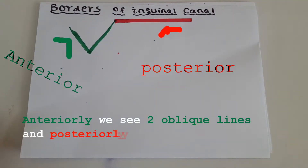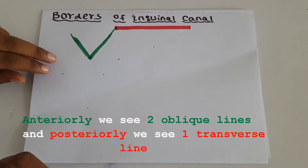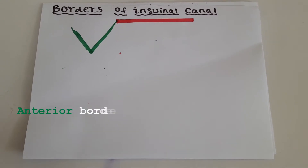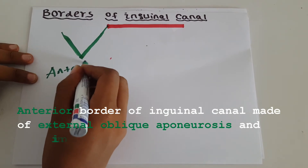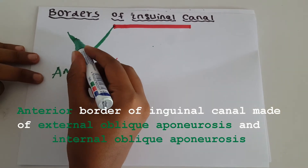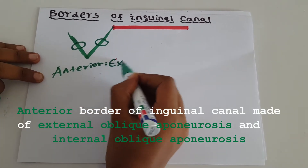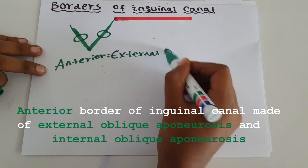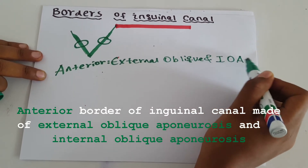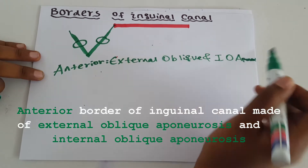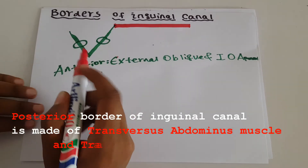As you see here, anteriorly we see two oblique lines and posteriorly we see one transverse line. The anterior border of the inguinal canal is made of the external oblique aponeurosis and internal oblique aponeurosis. And the posterior border of the inguinal canal is made of the transversal abdominal muscle.